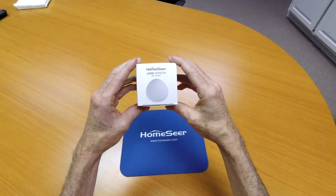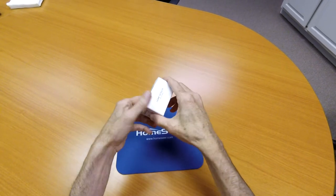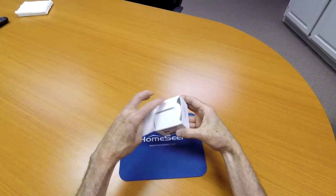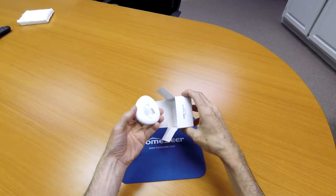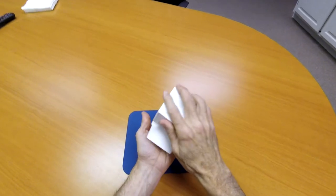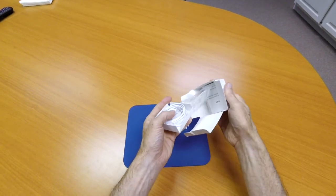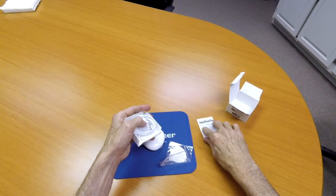In this video I'm going to unbox one of our new HSLS100 Plus Z-Wave Plus leak sensors. This unit is designed to detect water leaks and to report those water leaks to a home controller or to a smart hub so that you can trigger automation events like shutting a water valve or sending notifications to you.